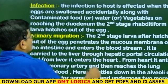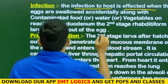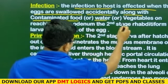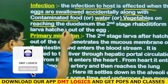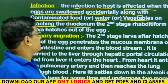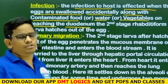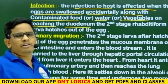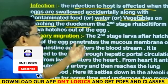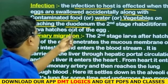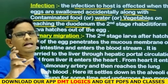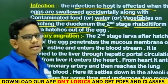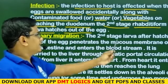Infection to the host occurs when the eggs are swallowed accidentally along with contaminated food, water, or vegetables. On reaching the duodenum, the second stage larvae hatch out of the egg.